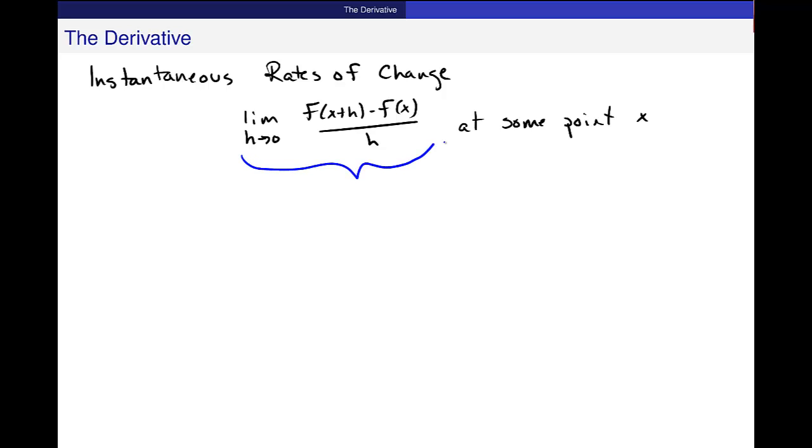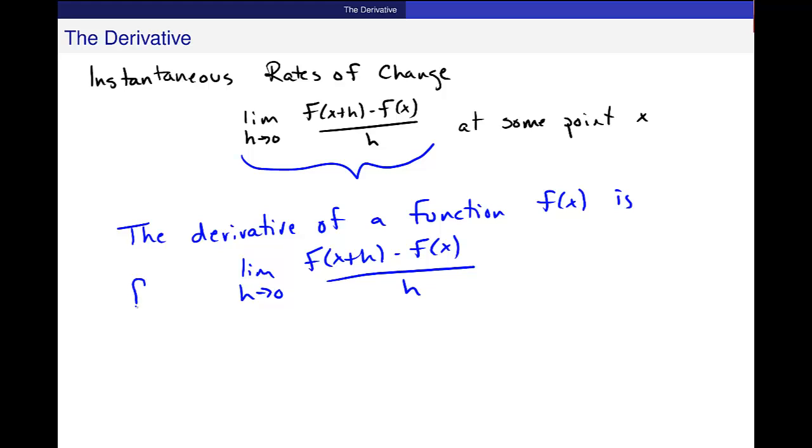This is the derivative. So the derivative of a function f of x is the limit as h goes to 0 of f of x plus h minus f of x over h. And usually we write that shorthand instead of having to write out the derivative of f of x.